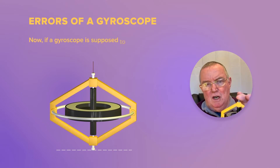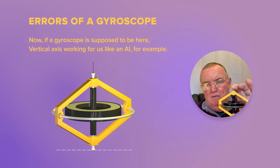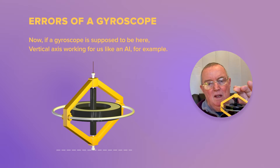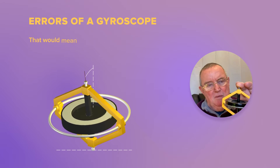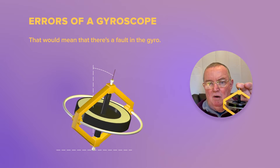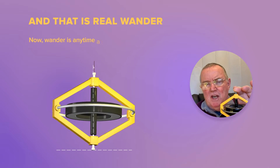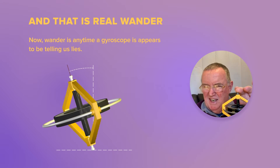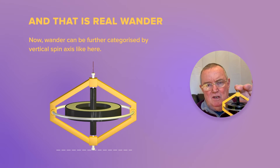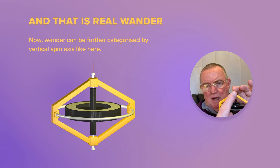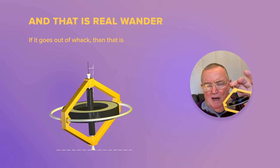Now if a gyroscope is supposed to be here, with a vertical axis working for us like an AI for example, if it were to tell us that it'd be telling us lies. That would mean that there's a fault in the gyro, and that is real wander. Wander is anytime the gyroscope appears to be telling us lies. Wander can be further categorized: a vertical spin axis like here — if it goes out of whack then...